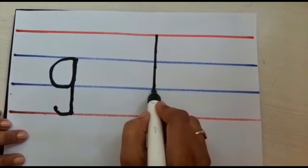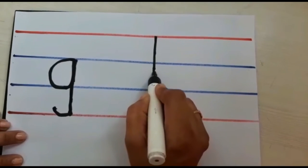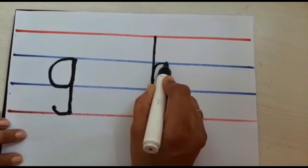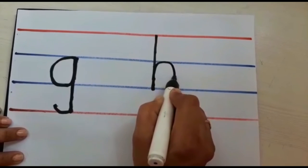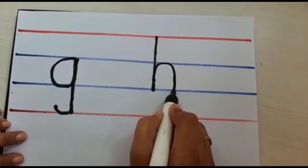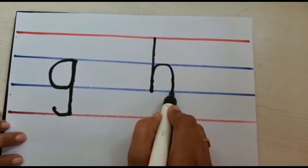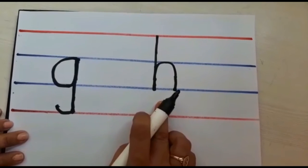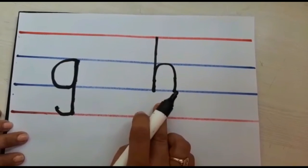Go up again on the same line. Go on. Make a curve. Touch the third blue line. This is a small h.